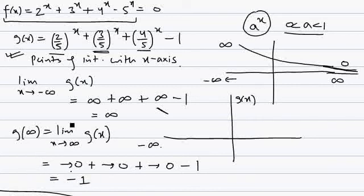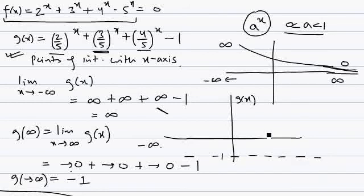You will understand this better after you have studied limits and continuity. So we have established: at -∞, g(x) → +∞, and at +∞, g(x) → -1. The graph of g(x) approaches the line y = -1 as x → +∞.